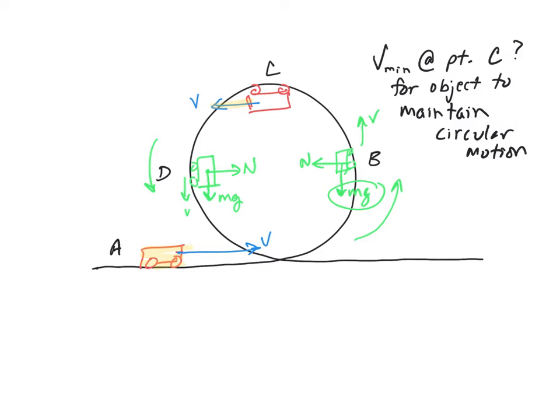If you're not moving at all, you're just going to fall, right? It's just going to fall straight down. So it has to have some velocity to be able to go around the top of that circle. But what's the minimum amount of velocity?